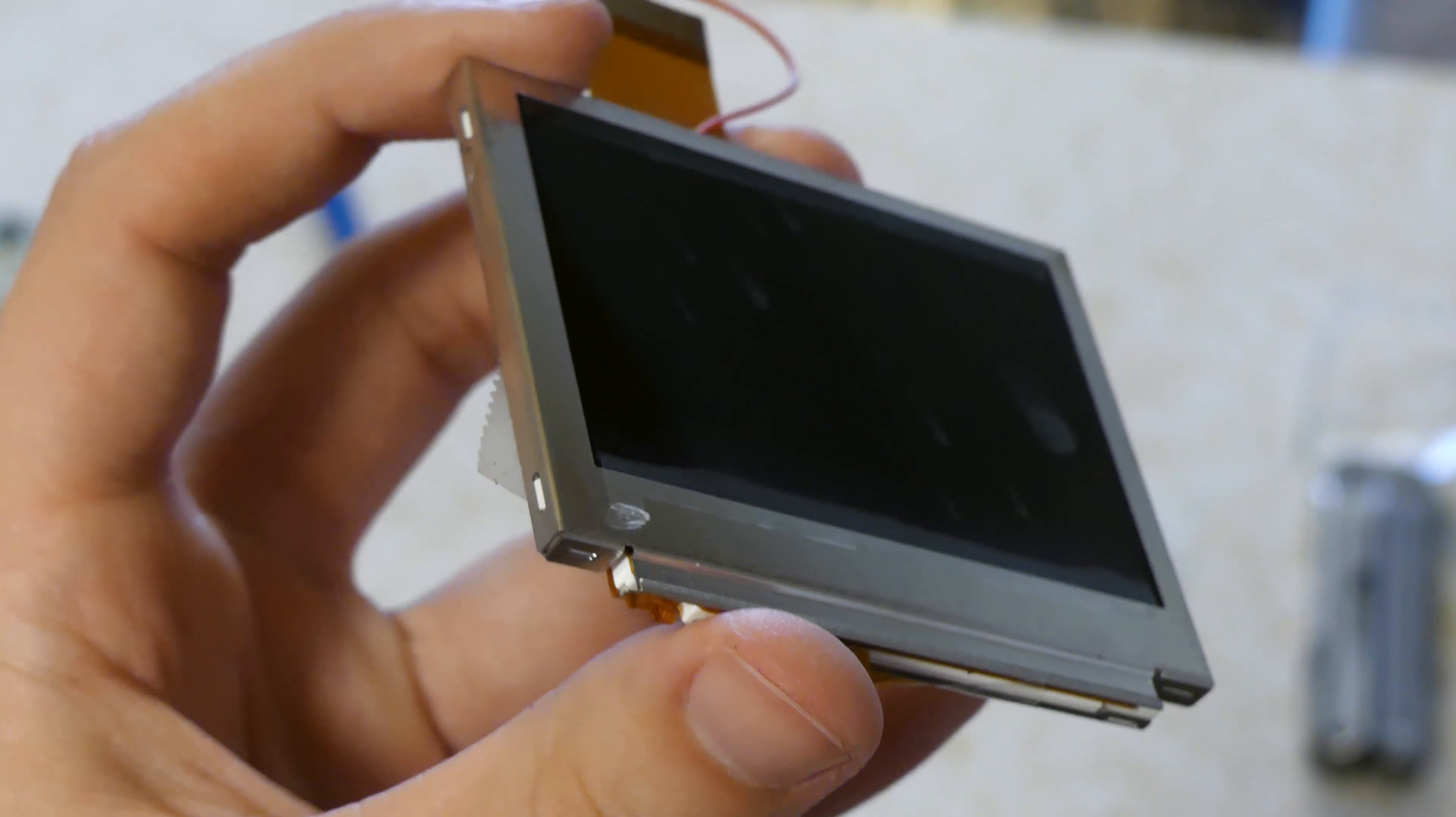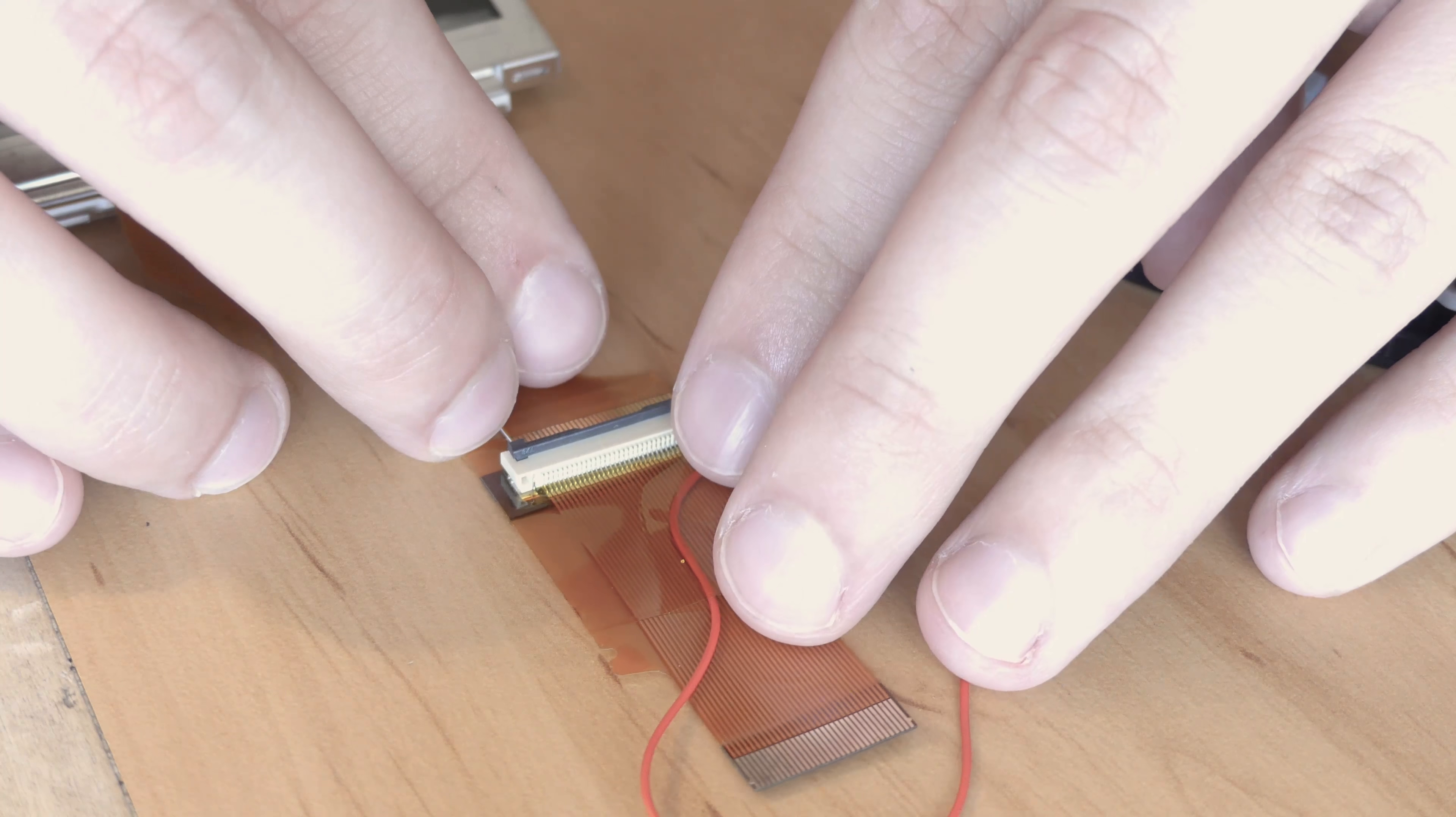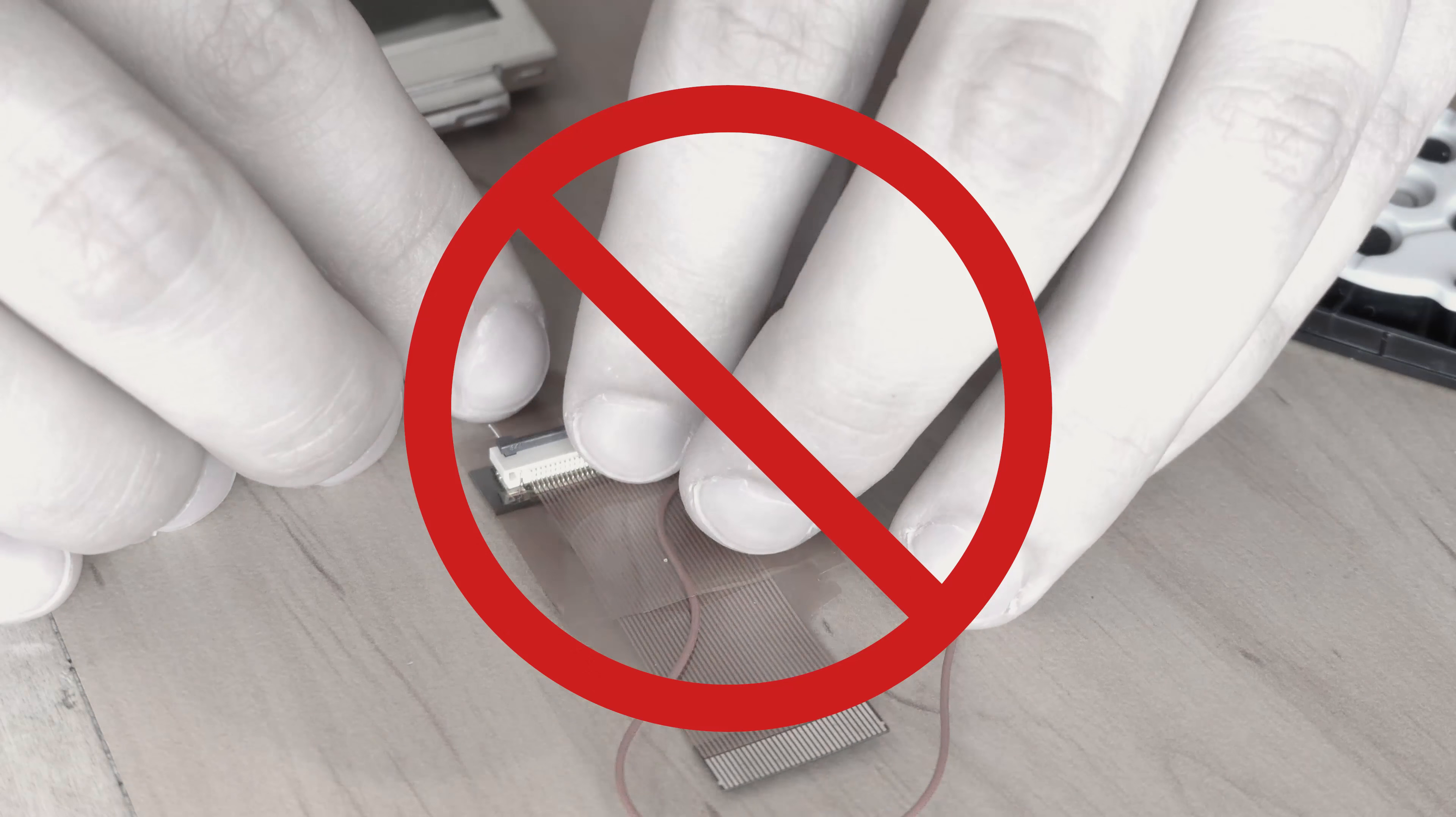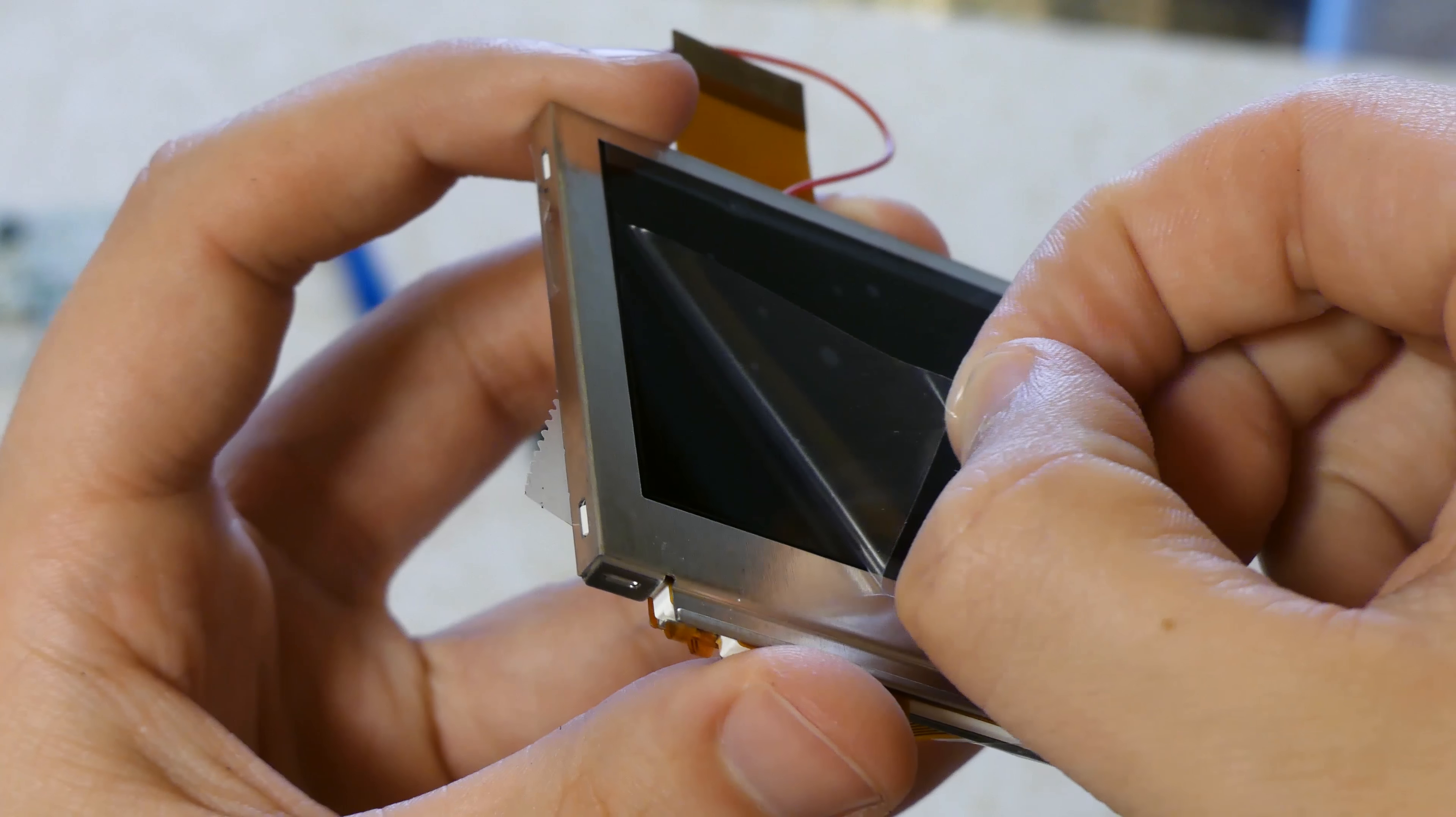Now it's time to install the AGS-101 screen. Attach the cable to the cable adapter with the white tab facing up. Not like I did it in this video. My bad. Don't do that. Before you place in the screen, make sure to peel off the protective coating.